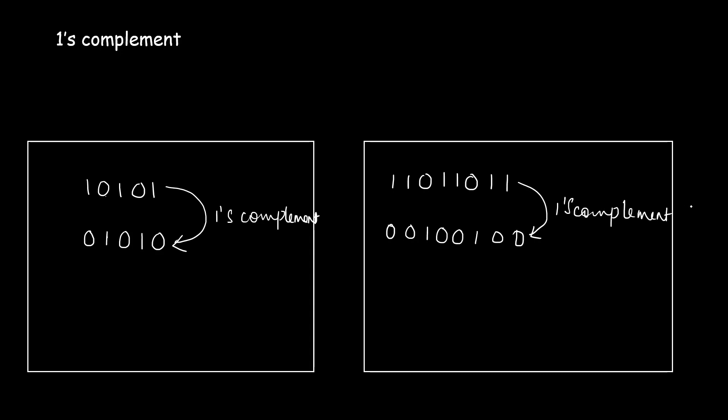So, one's complement form is simply changing all the ones of the binary number to zeros and all the zeros to ones. In the next session, I will explain how to subtract two numbers using one's complement form. Stay tuned, and if you like this video, kindly subscribe to the channel and share it with your friends. Thank you.